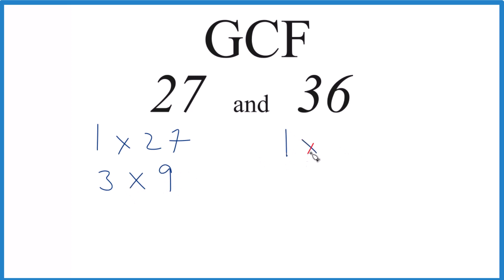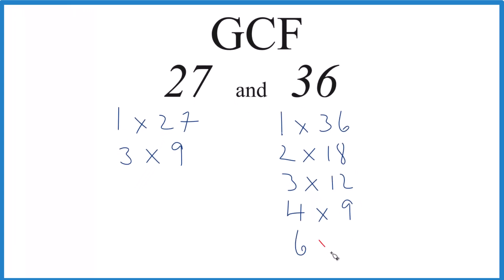For 36: 1 times 36, 2 times 18, 3 times 12, 4 times 9, and 6 times 6. There's a lot of factors for 36.